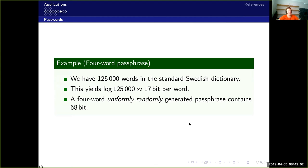If we look at the other suggestion that XKCD had, the four word passphrase, then we have 125,000 words in the standard Swedish dictionary. So the logarithm of that is 17 bits, so 17 bits per word. So if we use four word passphrase and we've chosen these four words independently and uniformly at random from this dictionary, then we would get 68 bits of entropy.